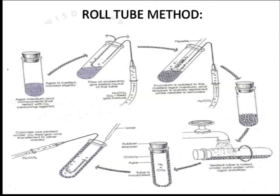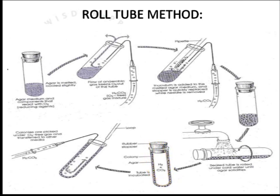In the second method of the roll tube technique, agar media with a reducing agent is placed in a tube, and oxygen-free carbon dioxide is continuously passed to maintain anaerobic conditions. The inoculum is added using a pipette, and after adding, the tube is rolled under cold running water so it becomes coated with molten agar on the surface. This is the second method for the roll tube method for isolation of anaerobic microorganisms.